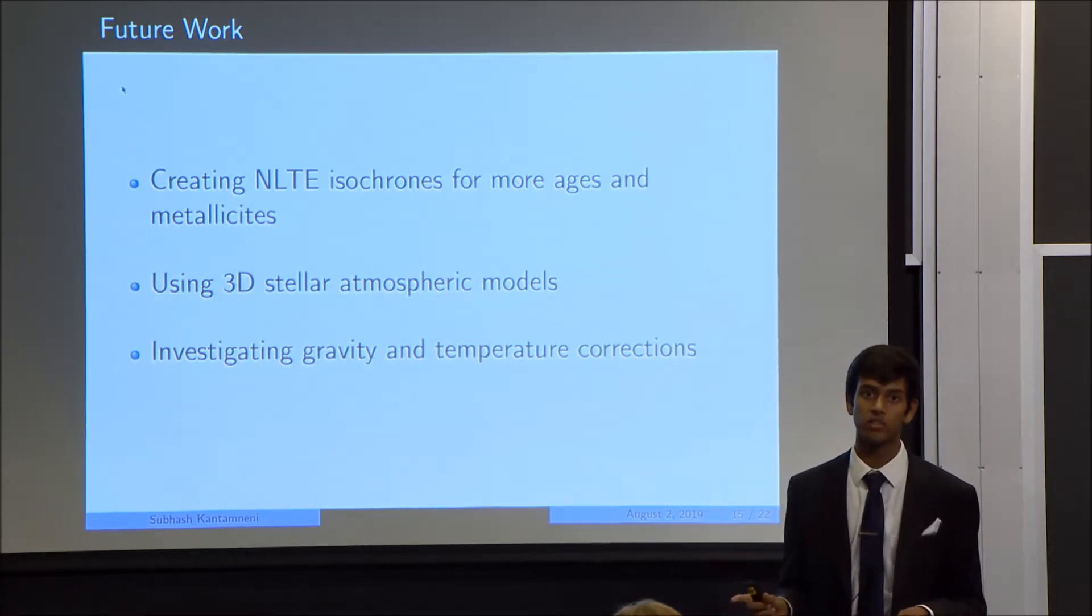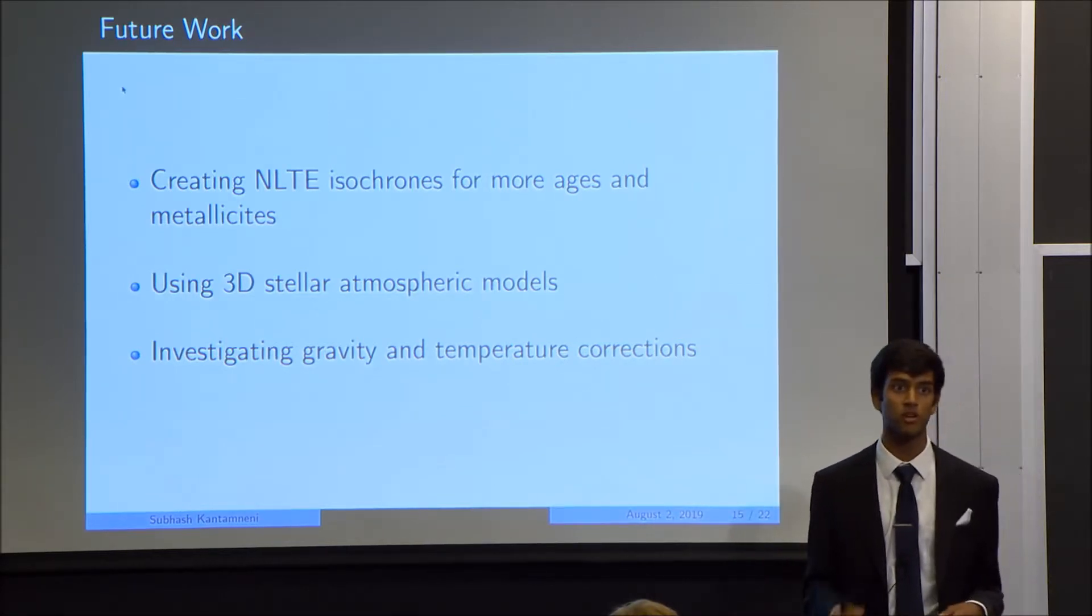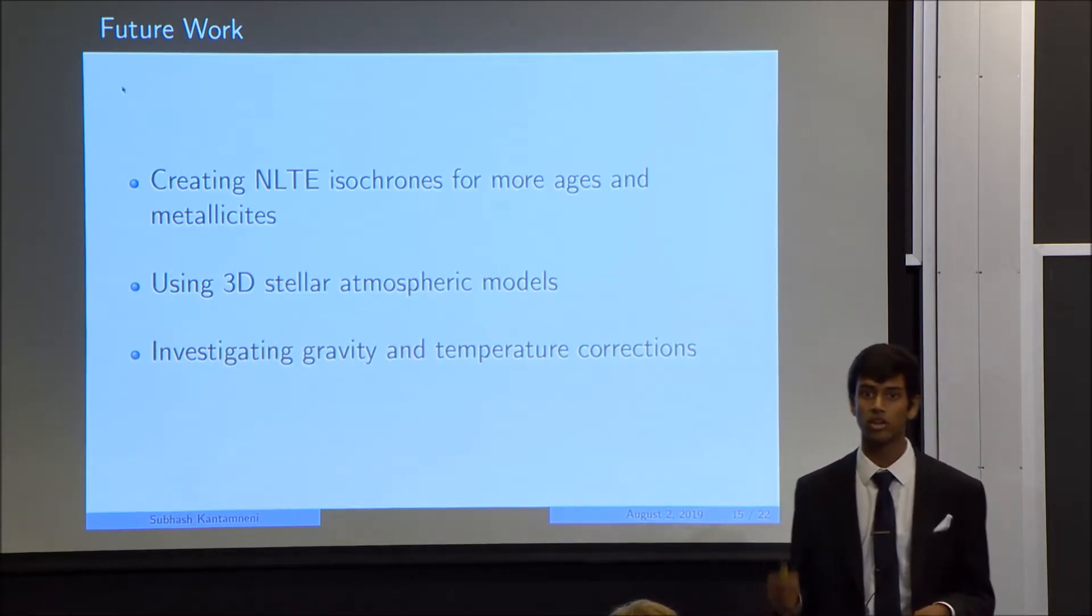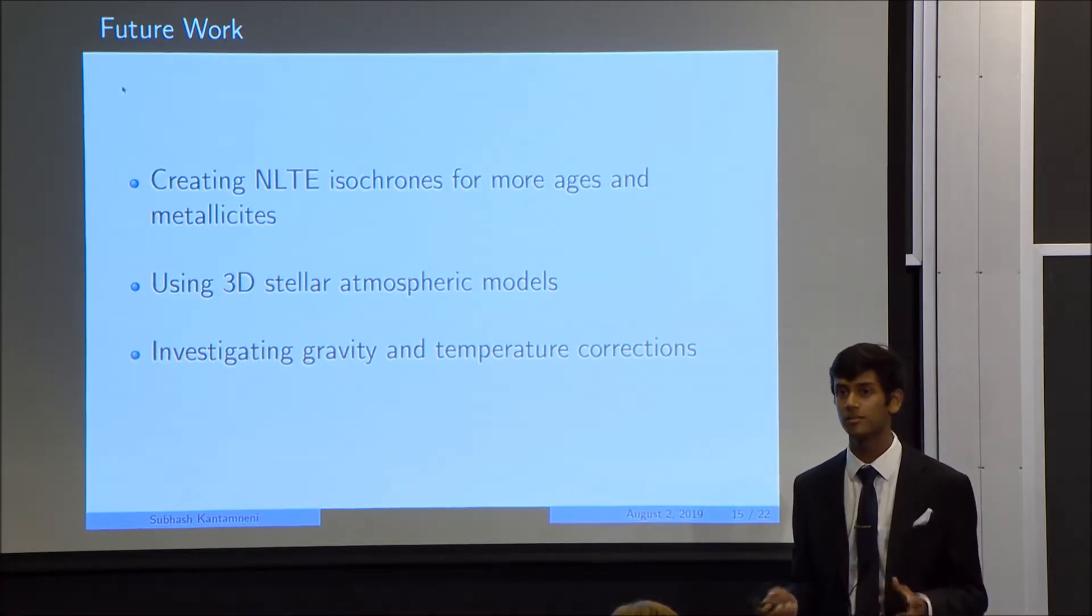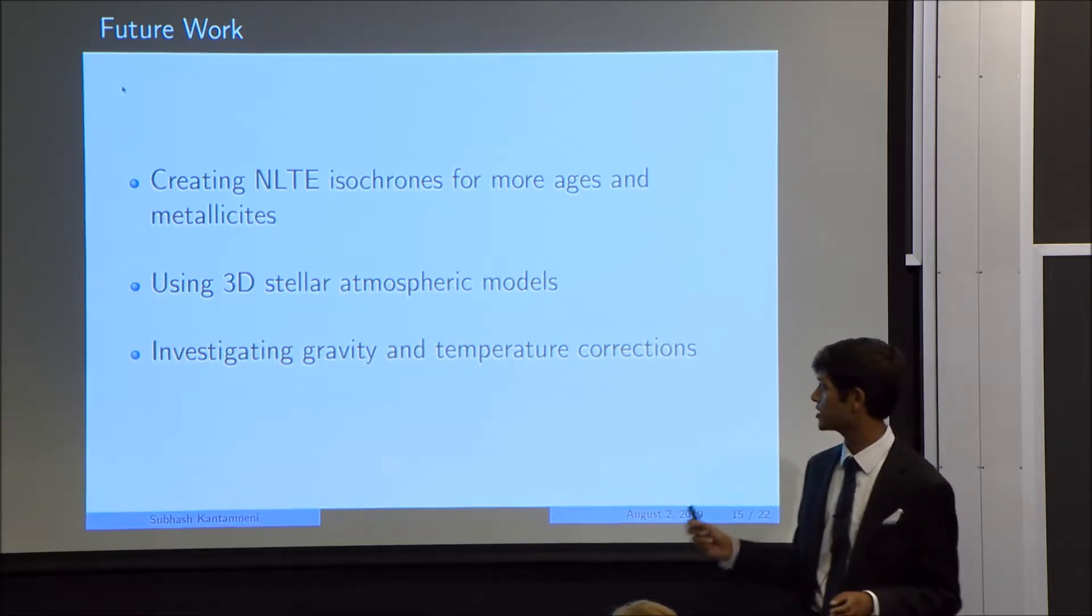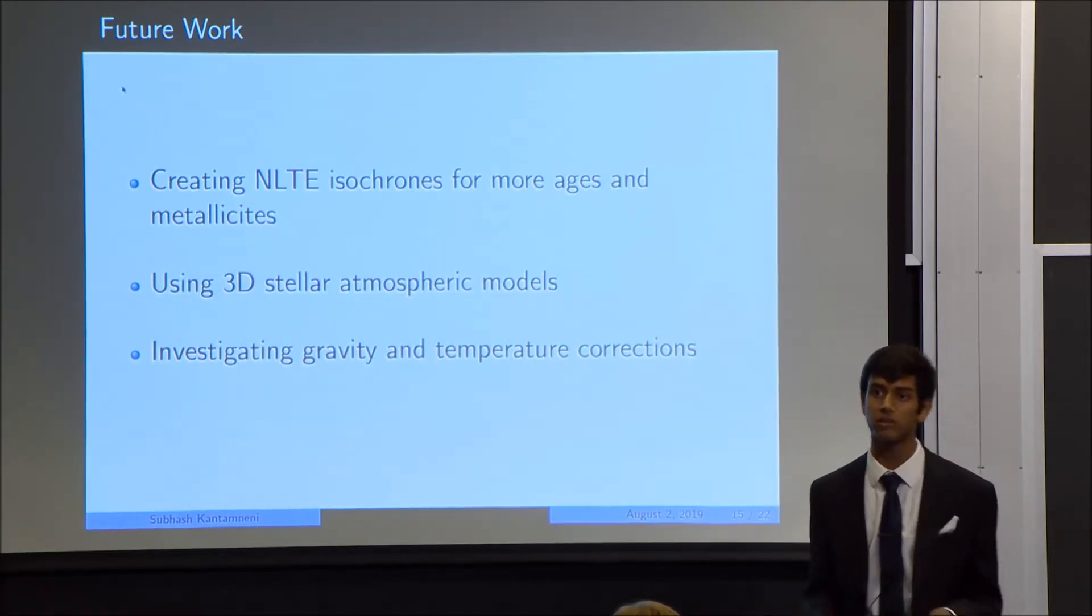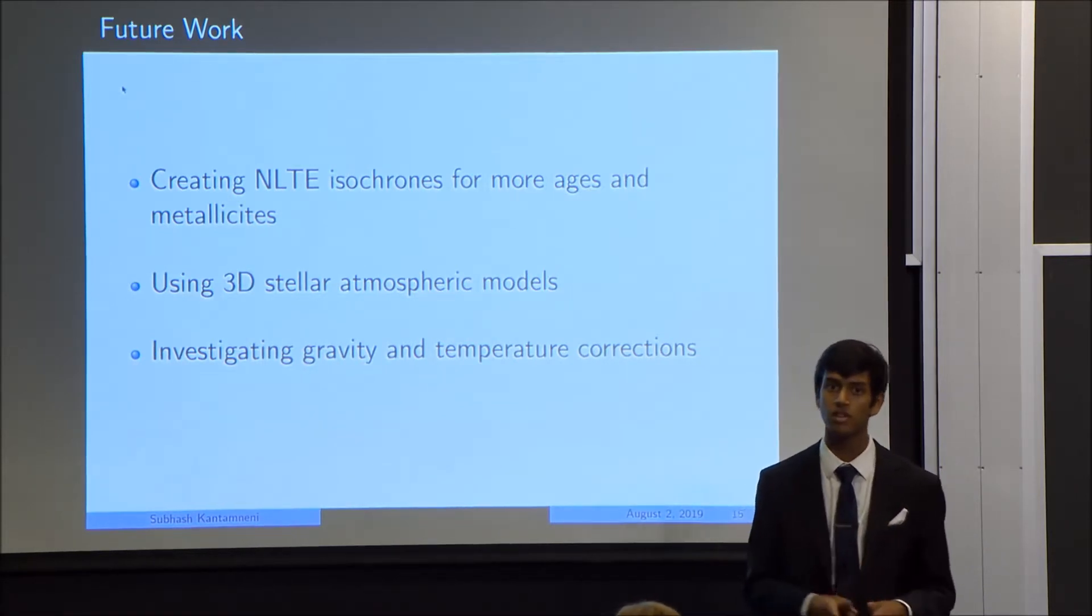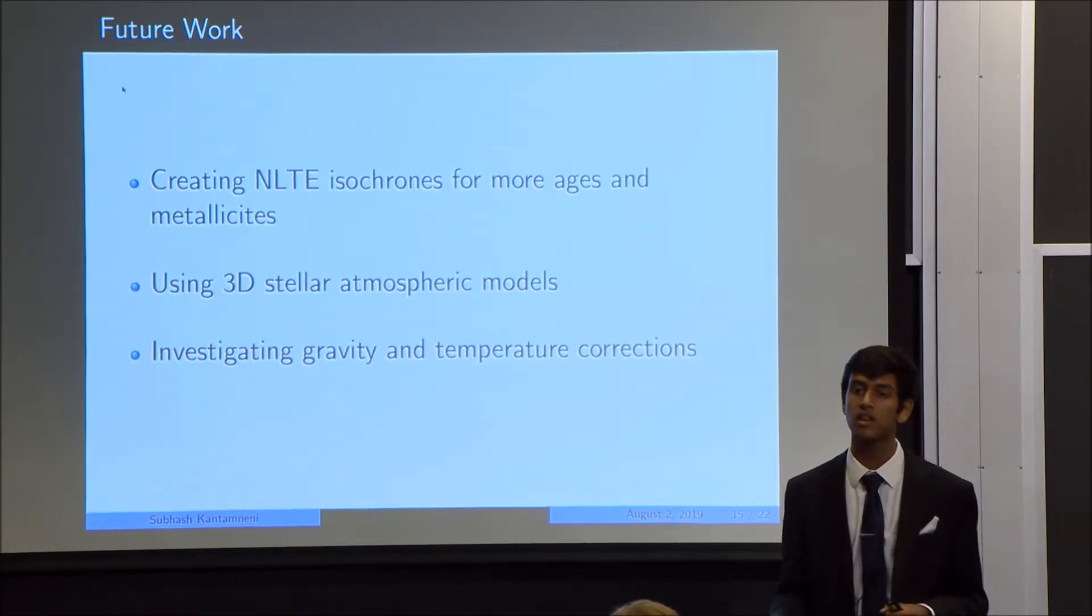Another thing that we can do to make the NLTE transformation even more accurate, we can use 3D stellar atmospheric models instead of the 1D stellar atmospheric models used in this project. The only problem with that is that these models are like an order of magnitude more computationally intensive than the already computationally difficult 1D stellar models. But as computing power increases in the future, this should be seen as a future avenue of research. And the last thing that we can do is investigate the relationship between the gravity correction and the original gravity, in addition to the relationship between the temperature correction and the original temperature. If we can find linear relationships that define these two sets of variables, we can essentially convert an isochrone from LTE to NLTE really simply using these transformations instead of running the entire NLTE calibration process like I did.